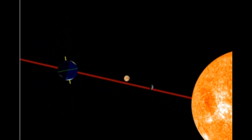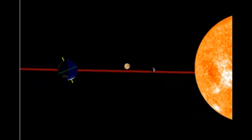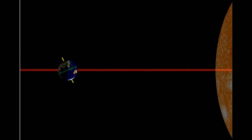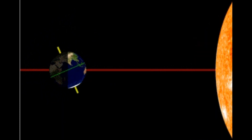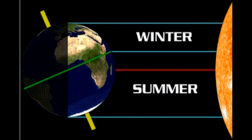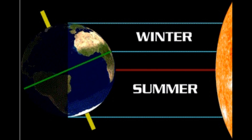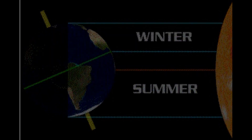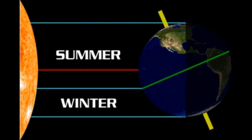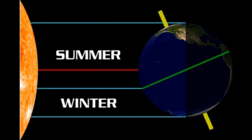Got to remember that tilt. What time of the year is this? It's winter in the north and summer in the south. And we can't forget six months later, where it's the exact opposite.